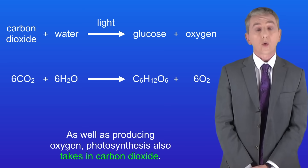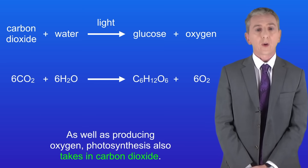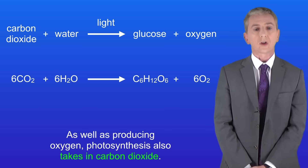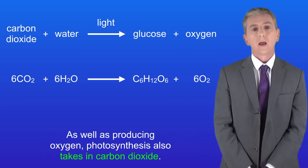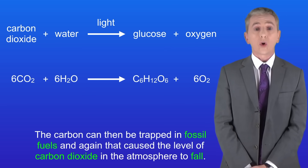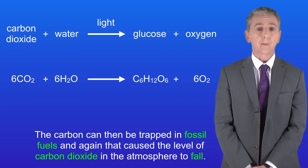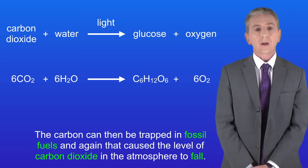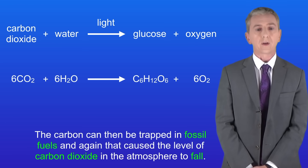The equation of photosynthesis shows that as well as producing oxygen, photosynthesis also takes in carbon dioxide. The carbon can then be trapped in fossil fuels, and again that caused the level of carbon dioxide in the atmosphere to fall. We'll be looking at how fossil fuels are formed in the next video.